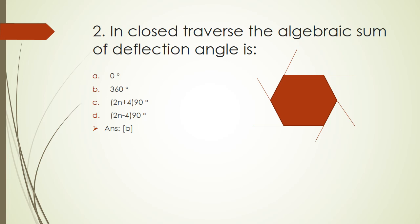Question 2: In a closed traverse, the algebraic sum of the deflection angle is: 0°, 360°, (2n+4)×90°, or (2n-4)×90°. The right answer is 360 degrees. The deflection angle algebraic sum is 360 degrees in any closed traverse.